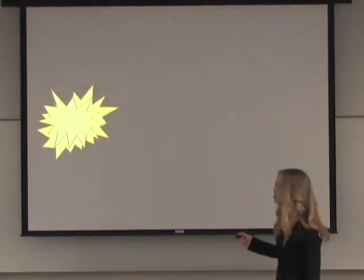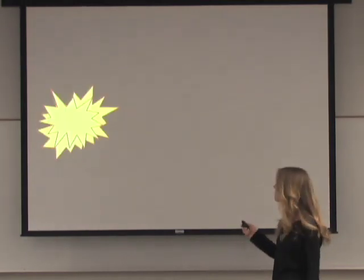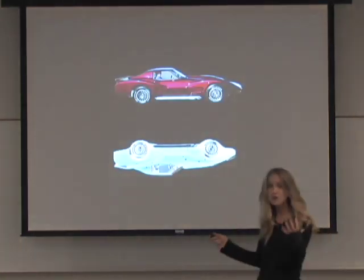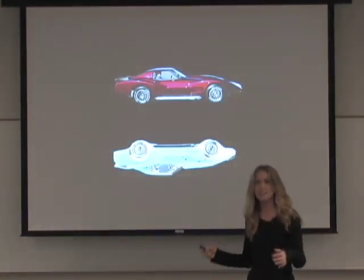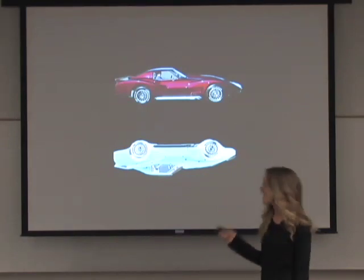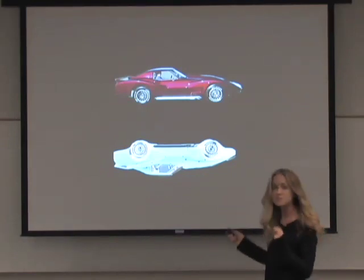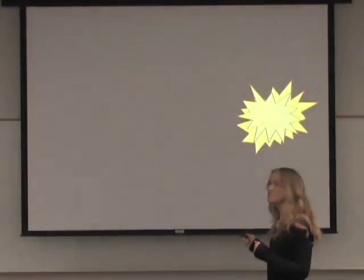So to recap: we could actually create a full Corvette and a full anti-Corvette, they drive for a split second, and then they have to disappear and we return all that energy back to the universe. So particles can walk through walls, and we can create particles out of thin air.